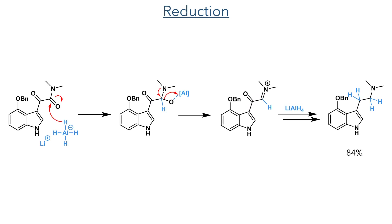This amide was then reduced using LiAlH4. This reagent adds a hydride to the amide, forming a tetrahedral intermediate with the oxygen coordinated to an aluminium species. This is eliminated, forming an aluminium intermediate, which is further reduced by another equivalent of LiAlH4. The ketone in the molecule is also reduced via a similar mechanism, forming the product in an 84% yield.